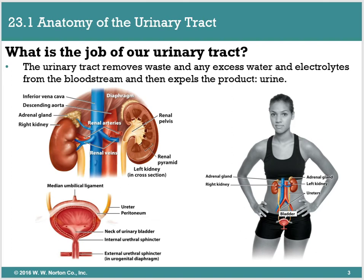The kidneys and the ureters are what's considered the upper urinary tract, and then the lower urinary tract is going to be the urinary bladder. The ureters are what actually travel from the kidneys to the bladder, and then the urethra is roughly part of the reproductive tract. For the most part, we are going to focus on the kidneys and the bladder.